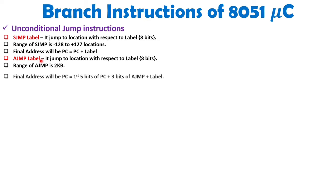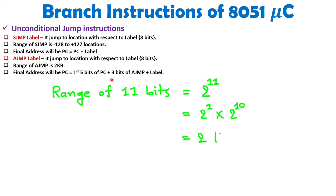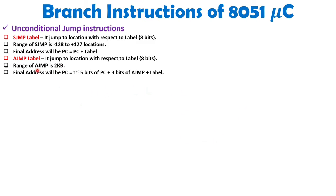When we talk about AJMP, that is Absolute Jump. Here the label is also 8 bits in size, but the range of that jump is 2 KB. The final value of the Program Counter will be the first 5 bits of the Program Counter as-is, then 3 bits from AJMP, plus the label which is 8 bits. So in total, 3 plus 8 equals 11 bits, giving a range of 2 to the power 11, which equals 2 KB.